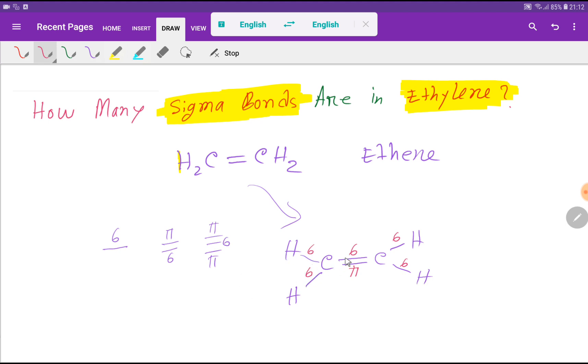So look at here, we have one, two, three, four, five. We have totally five sigma bonds in ethylene.